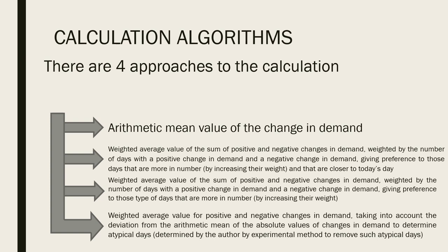The next following calculations use the weighted average value. The idea was to introduce some weight to receive probably better results. These approaches use weighted average value of the sum of positive and negative changes in demand, weighted by the number of days with positive change and negative change in demand. Demand can increase or decrease. The first approach gives preference to those days that are more in number by increasing their weight because they are more, it is more likely to happen.